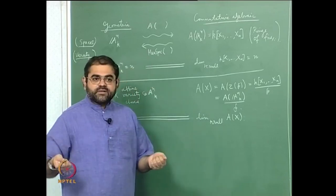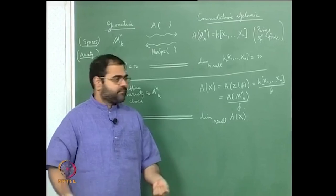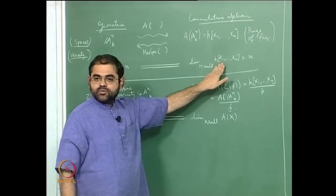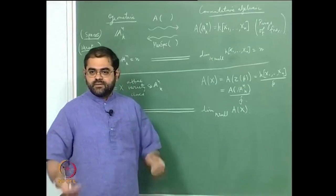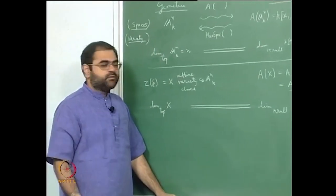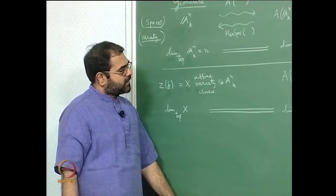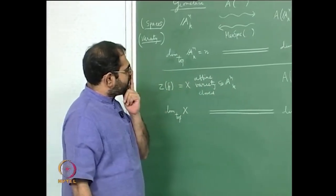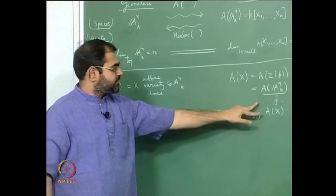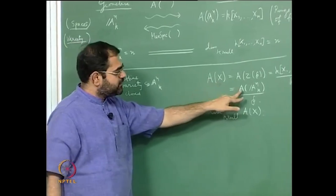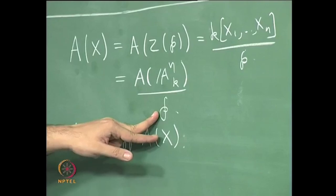Just as the dimension of a vector space gives you the maximal number of linearly independent elements, the transcendence degree of the quotient field of the polynomial ring is n — which is intuitively clear but requires proof using some field theory.